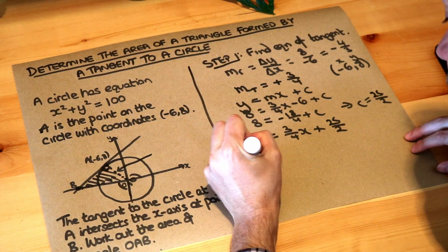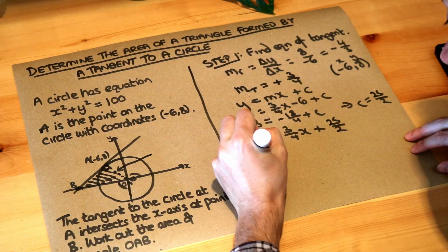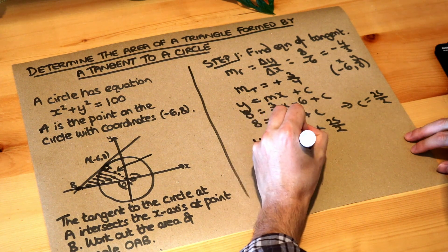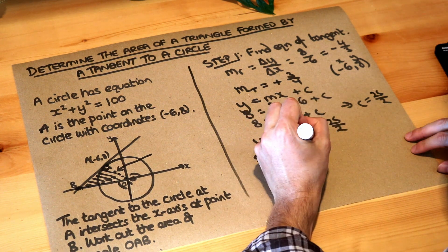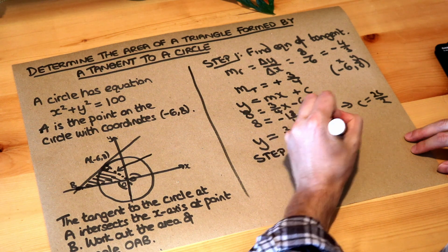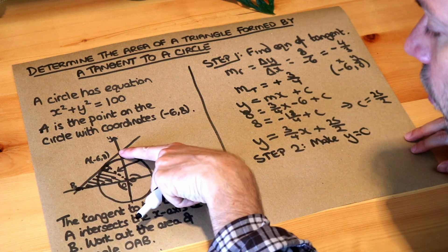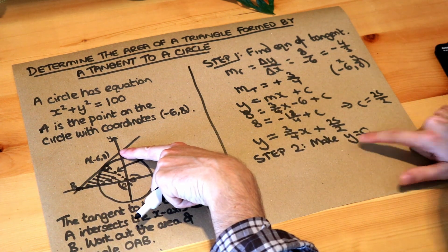Now we need to find the point B, so step two. If you want to find the x-intercept, you make y zero. However, if this point was actually on the y-axis, then you make x zero instead.